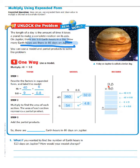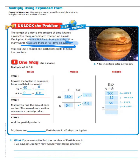So now we're going to record all our partial products. 9 and 8 tenths times 46: 40 times 9 is 360 in our first box. 40 times 8 tenths is 32, which we slide into the next box. 6 times 9 is 54, which goes into the third box. And our last step is 6 times 8 tenths, which is 4 and 8 tenths, going into the final box.